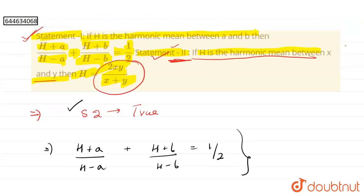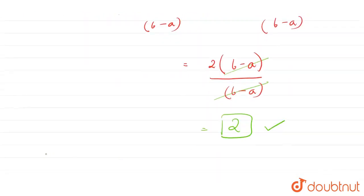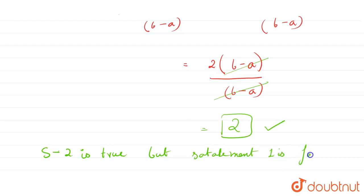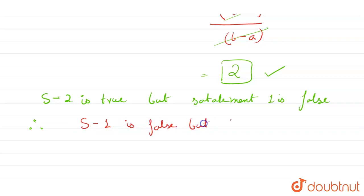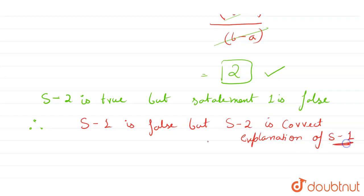What we were given in Statement 1 was 1/2, but we got 2. So Statement 2 is true, but Statement 1 is false. The harmonic mean is always 2ab/(a+b), but the result given in Statement 1 was wrong — it should be 2, not 1/2. Hence, Statement 1 is false, but Statement 2 is the correct explanation of what Statement 1 should have been.